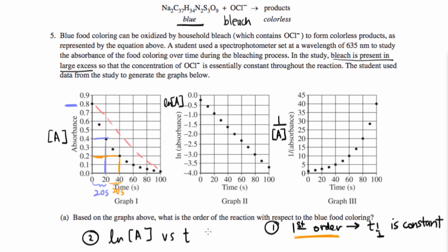And we can see from graph two that this is the case. So we have these two pieces of evidence from graph one and graph two that tell us that this particular reaction is actually first order with respect to the blue food coloring.